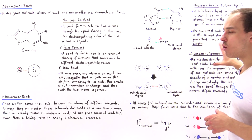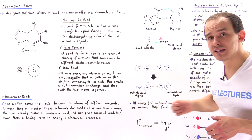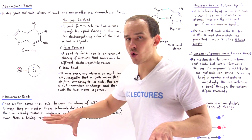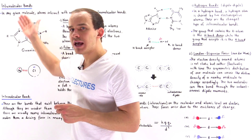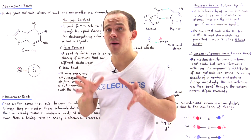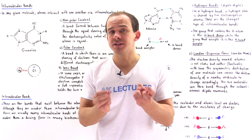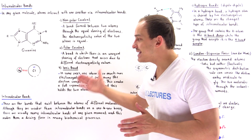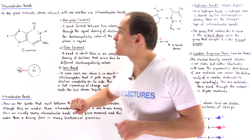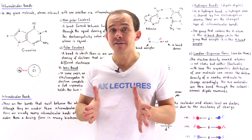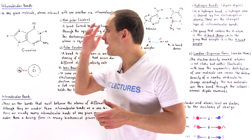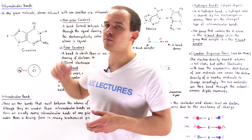All the different types of bonds we're going to discuss in this lecture are electric in nature. We have two categories of bonds: intramolecular bonds and intermolecular bonds. Intramolecular bonds are the bonds that hold atoms together within a given molecule, while intermolecular bonds hold atoms together on different molecules. Intramolecular bonds are, on average, stronger than intermolecular bonds on a one-to-one individual basis. Let's discuss the three types of intramolecular bonds.